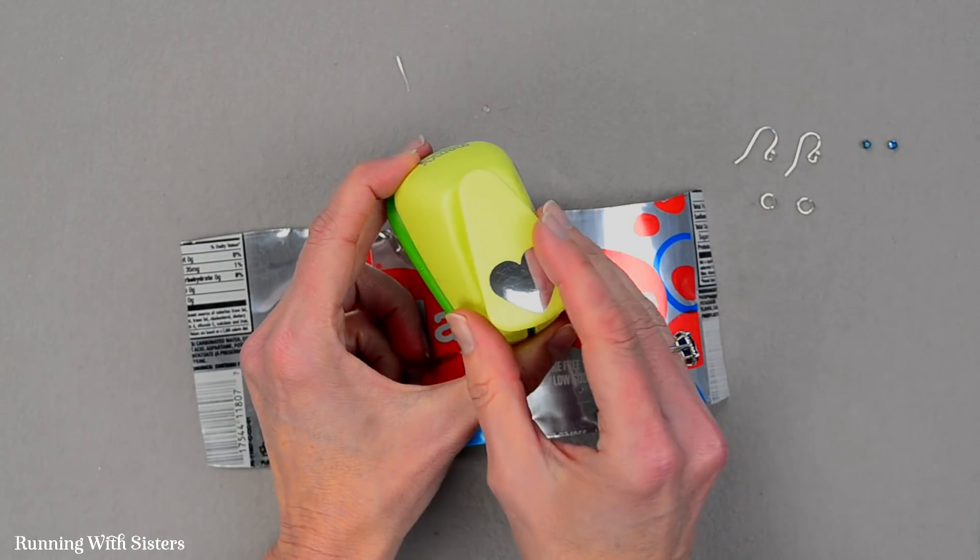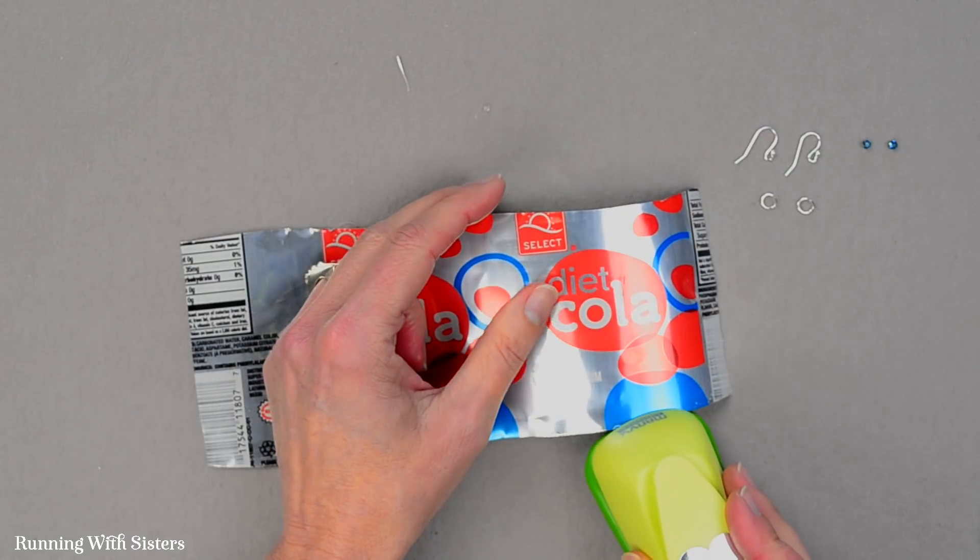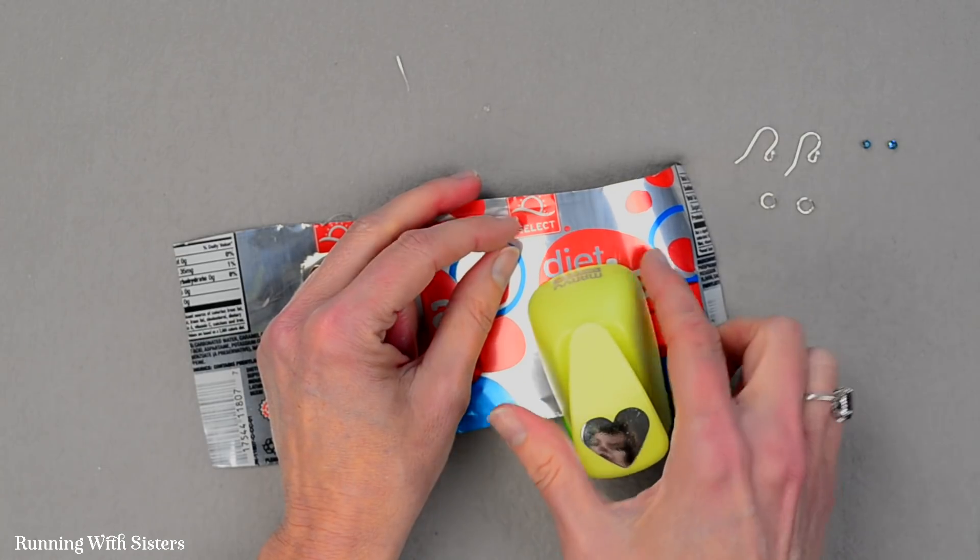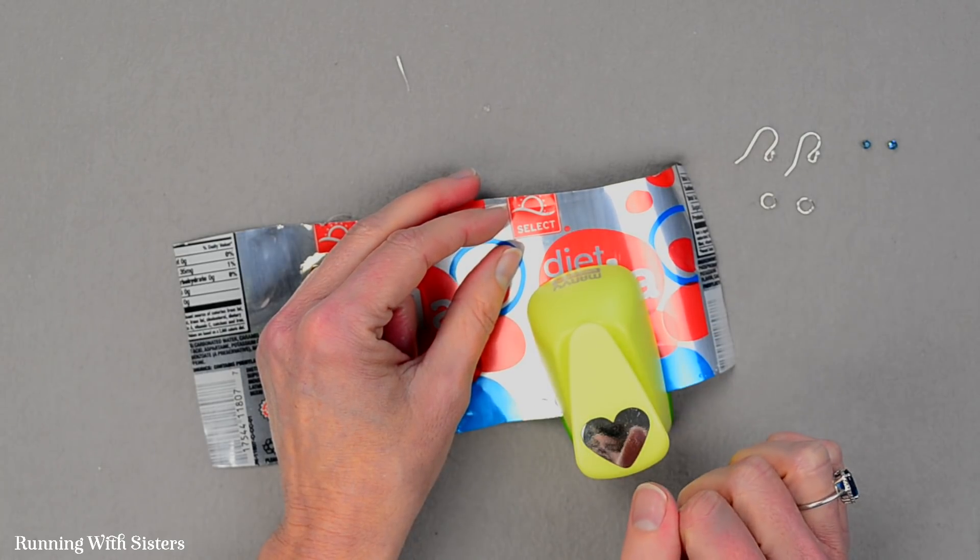And a little trick with this is instead of using the hole punch this way to punch my tin, if I used it this way I wouldn't be able to see which part of the can design I'm getting in my earrings. So instead I'm going to use it upside down.